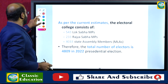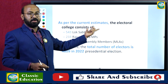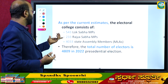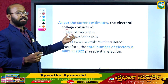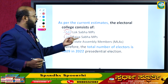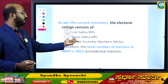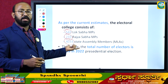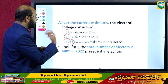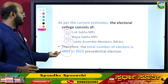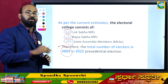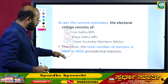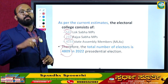As per current estimates, the electoral college consists of 543 elected members in Lok Sabha, 233 elected members in Rajya Sabha, and 4,033 MLAs in different states and union territories. Adding all these figures gives a total of 4,809 electors — 4,809 participants in the electoral college — all representatives of the people who will participate in the election of the President of India.